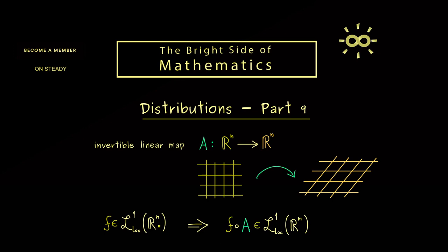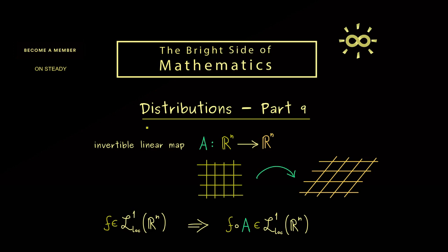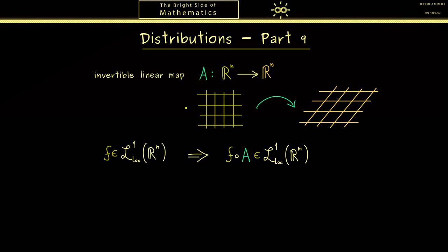Now of course the question for us is what is the connection between the two corresponding distributions, and you might already know this will be the blueprint for the general definition. In other words, we need to define what happens to a distribution when we apply such a coordinate transformation.